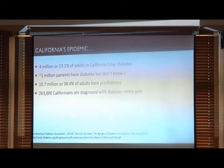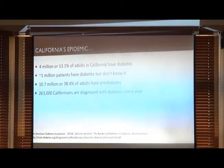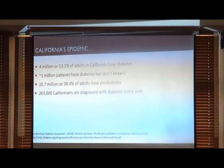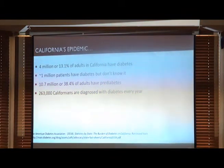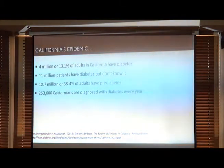Here in California, it's an epidemic as well. There are four million Californians who have diabetes. About one million patients have diabetes and don't even know it. 10.7 million in California have pre-diabetes, and there are 260,000 Californians who are diagnosed with diabetes every single year. Diabetes is really a silent epidemic, and I think in future generations looking back, this will definitely be something that children learn about in elementary school as something that has really affected the population.